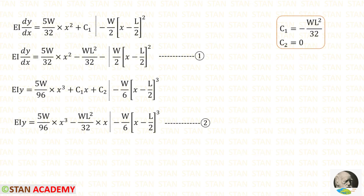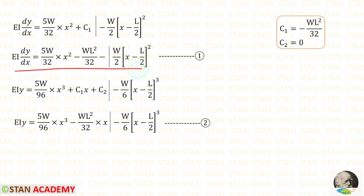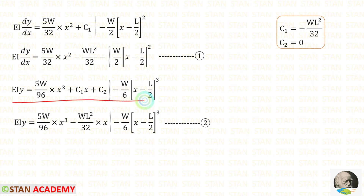Substituting C1 into the EI dy/dx equation gives the slope equation — let us call this equation 1. Substituting C1 and C2 into the EIy equation gives the deflection equation — let us call this equation 2.